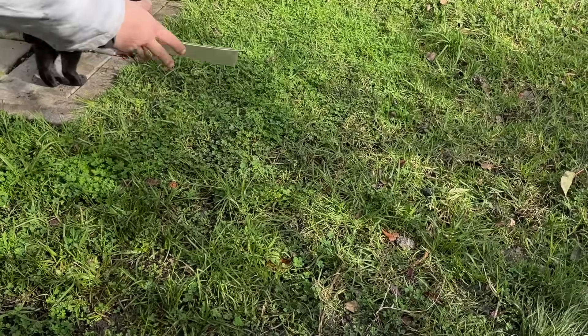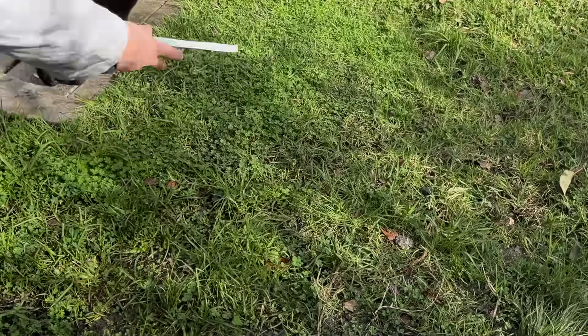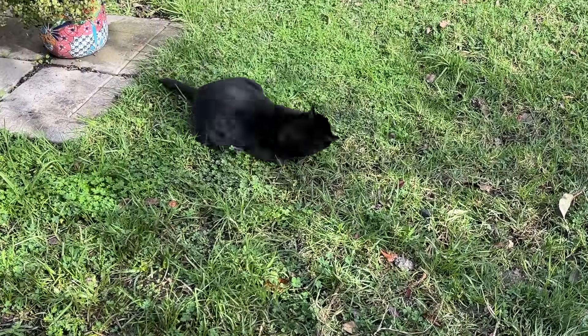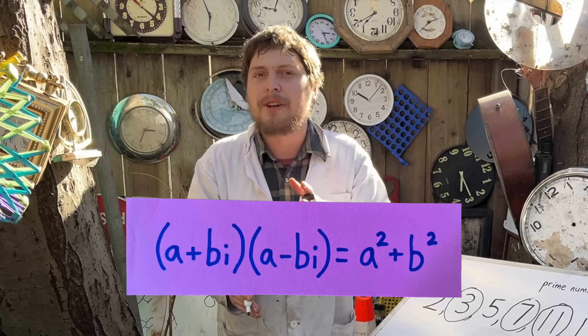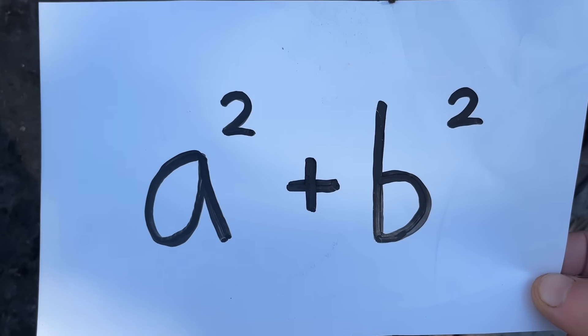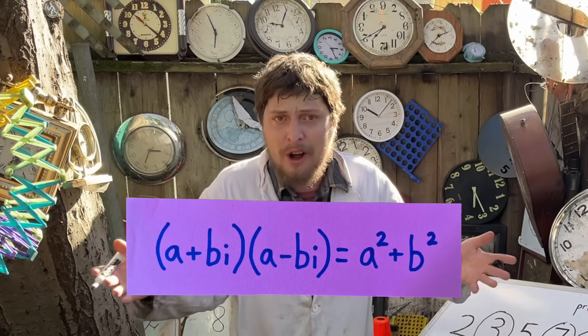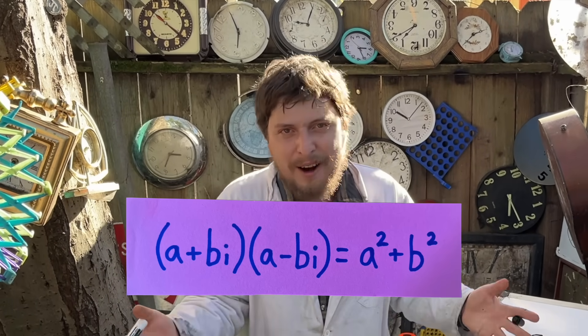Well, remember that the way we reached the ones we saw earlier was by multiplying complex conjugates that resulted in a squared plus b squared being our result. The sum of two squares.